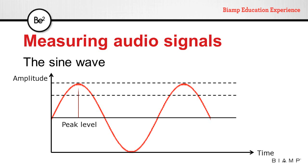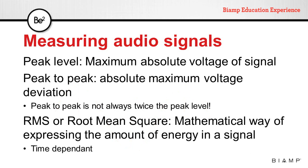Peak level is the maximum absolute voltage of that signal. Peak-to-peak is the absolute maximum voltage deviation. Peak-to-peak is not necessarily twice the peak level.